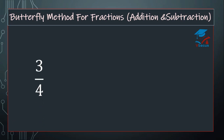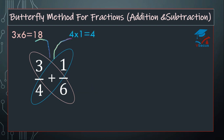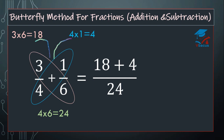Now add 3 over 4 plus 1 over 6. You have to multiply 3 by 6, that will become 18. Then multiply 4 by 1, that will become 4. Now multiply the denominators and add the numbers: 18 plus 4 over 24. If you add them, it will become 22 over 24.